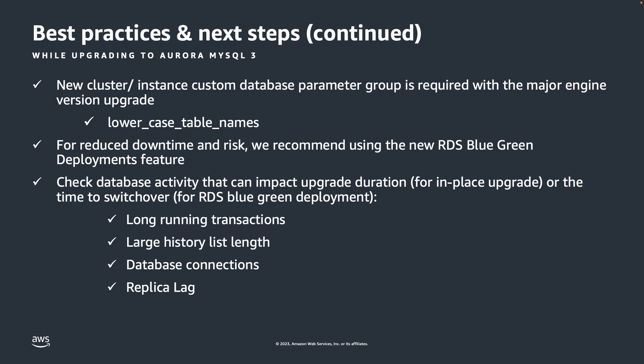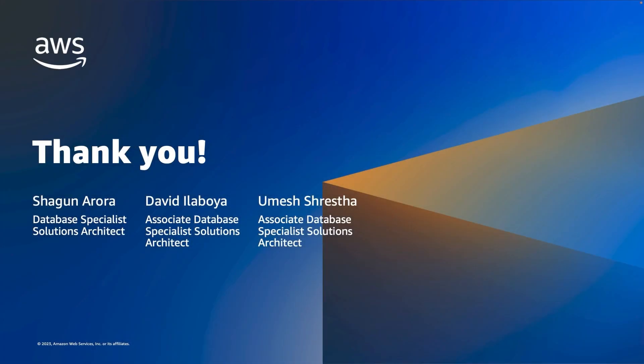With this, I'd like to conclude this session. These best practices are covered at a high level and will vary depending on the criticality of your workloads and application. Please reach out to your AWS teams if you need more assistance. We hope this session and the demo were helpful to plan your Amazon Aurora MySQL major version upgrades with the RDS blue-green deployment. Thank you for your time, and we wish you happy cloud computing from all of us here at AWS.